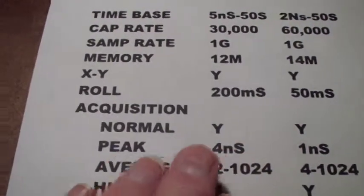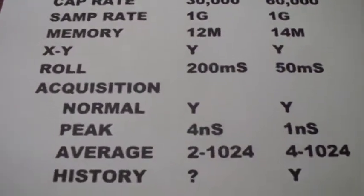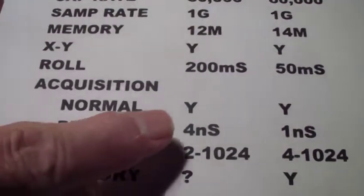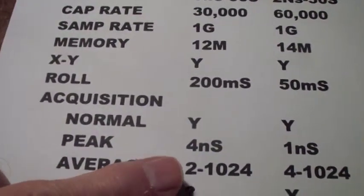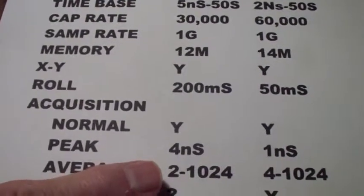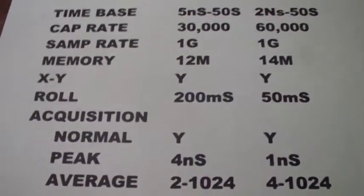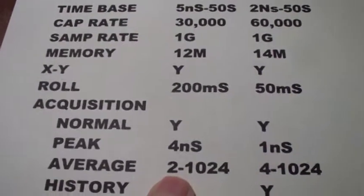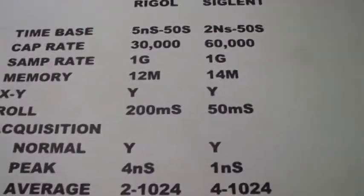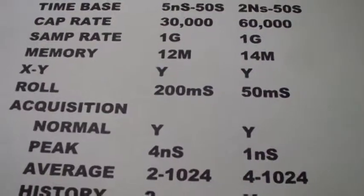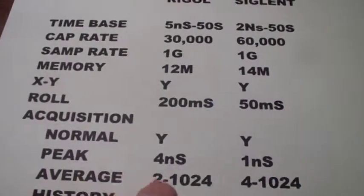There are basically three types of acquisition these scopes do — both of them do all three: normal mode, peak mode, and average mode. In average mode, you eliminate noise by averaging several sweeps together. In the Rigol you can have as few as two sweeps in the average up to 1,024. With the Siglent you can only start at four, so you can have an average of one or, in the Rigol's case, two, four, eight, and so on.